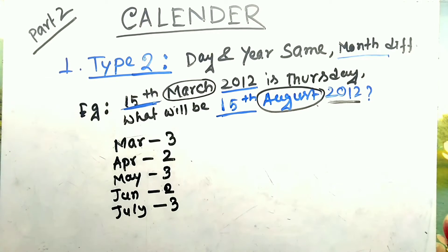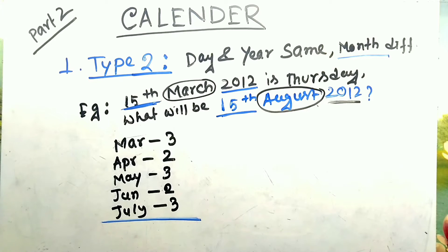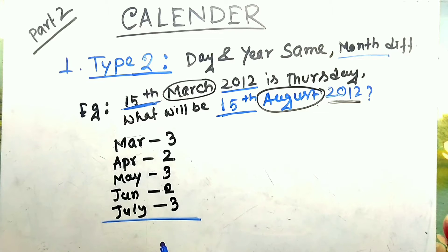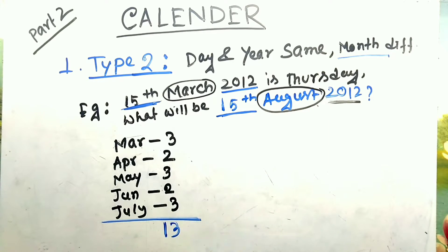We do not count August itself, so calculate only March to July. I have already discussed how to calculate odd days for months, years, and centuries — you will find the link in the info button, so do check that video. Adding the odd days for March through July: 3+2+3+2+3 = 13 total odd days.